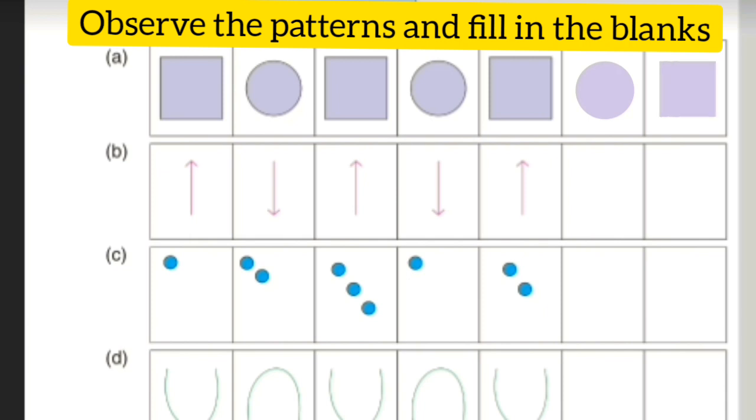Sum number B. The direction of the arrow is up, down, up, down, up. We will make the direction of the arrow down. In the next box, we will make the direction of the arrow up.